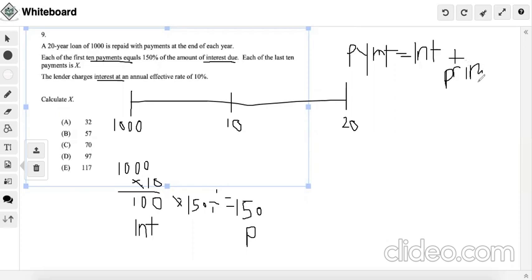So that would mean that in the first case scenario, if we have 100 interest and we paid out 150, then that would mean there would be a principal of 50.